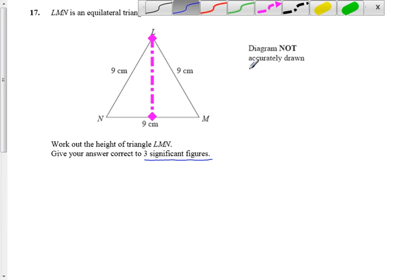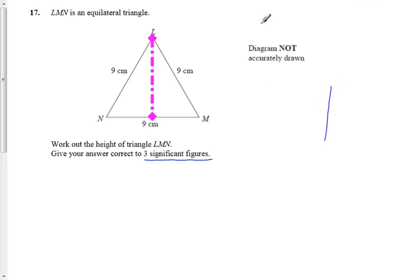Now, if I was to draw this triangle out roughly like that there, I want to work out this length here, the height x, which is the pink or purple line here.